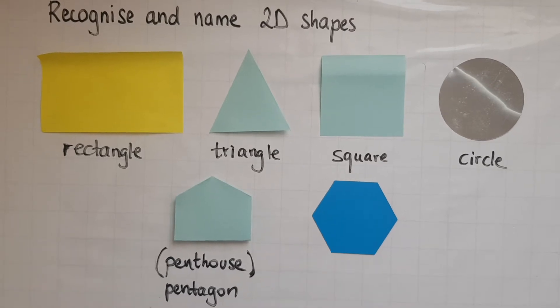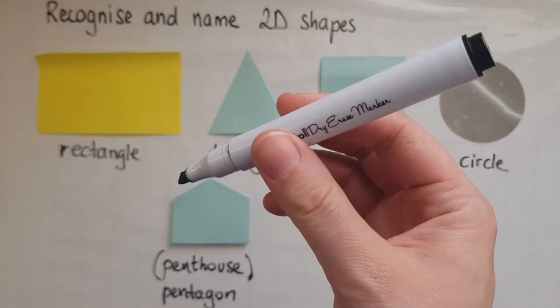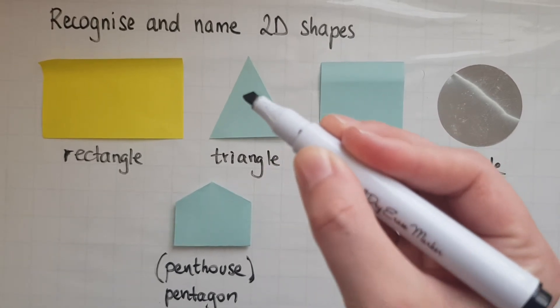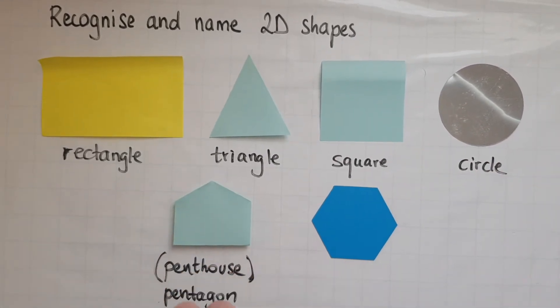Another way to remember this is through a pen, which you need five fingers to hold. So, five fingers, five sides, and that's a pentagon.